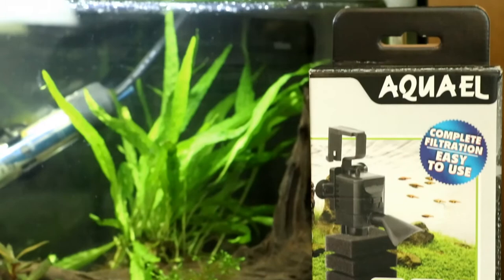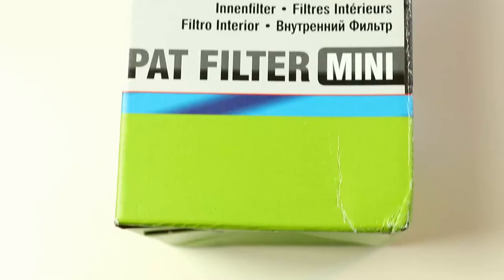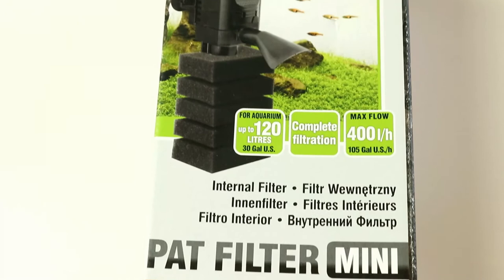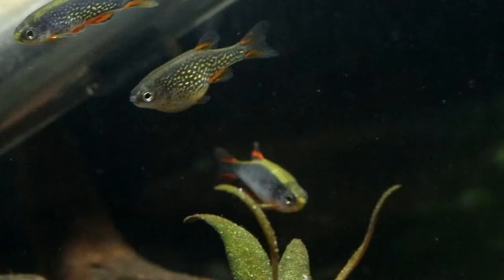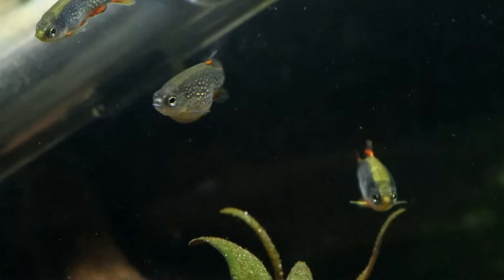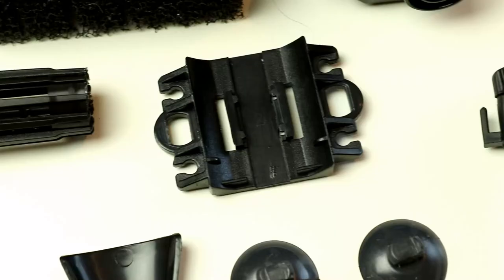Price wise I have seen the Mini Pat advertised anywhere between fifteen and twenty pounds, usually depending on whether or not postage has been included as well. And at that price point it really really is a good filter, especially if you're looking to breed either fish or shrimps in smaller tanks.